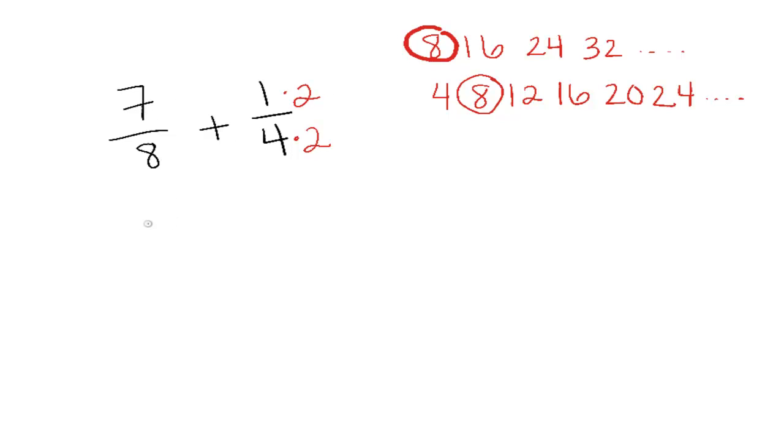So I'm going to rewrite my problem. 7 8ths was fine to stay 7 8ths because the denominator was already an 8. Now this one, now becomes 1 times 2 on top, which is 2. And on the bottom, 4 times 2, which is 8.